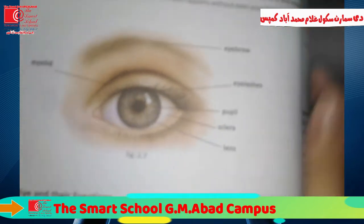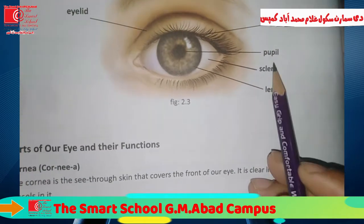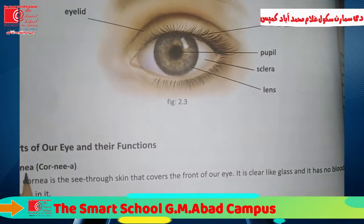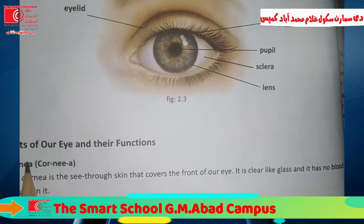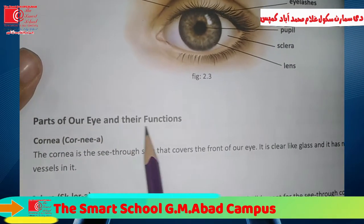Now let's look at the parts of the eye. Cornea — parts of our eye and their functions.